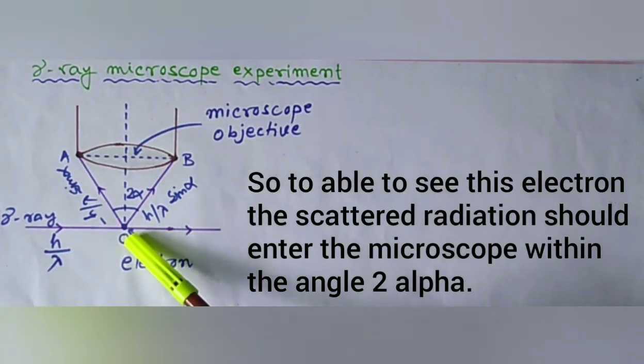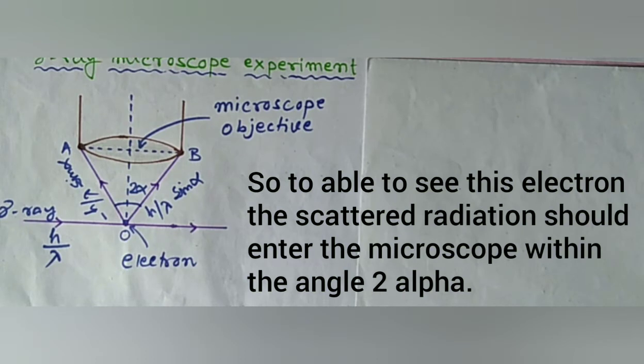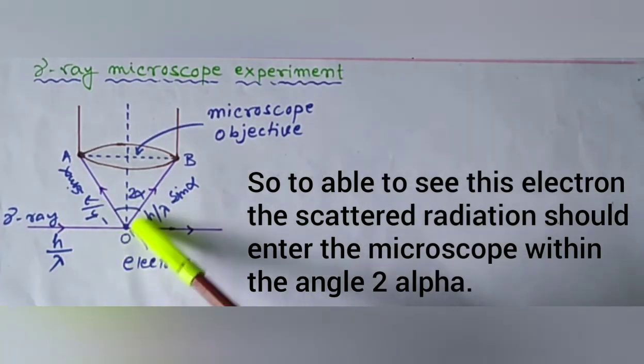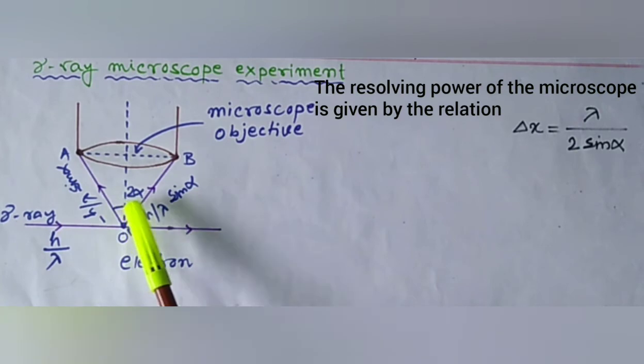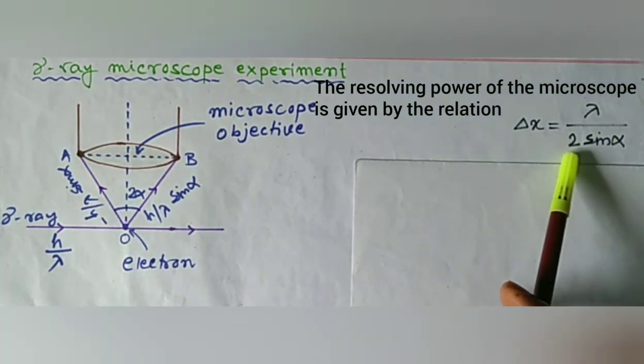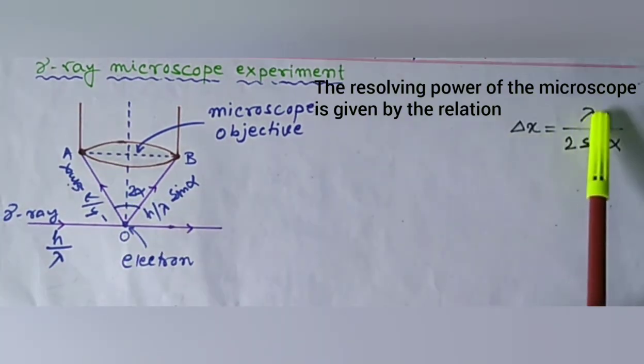So to be able to see this electron, the scattered radiation should enter the microscope within the angle 2-alpha. The resolving power of the microscope is given by the relation delta x equals lambda by 2 sin alpha.